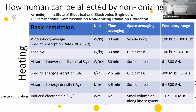We will talk about non-ionizing radiation, because most of us working with radio-frequency machines don't use ionizing radiation in our work. So let's talk about frequencies from 1 Hz to 300 GHz. There are some key standards that tell us about the limitations of exposure to electromagnetic fields.